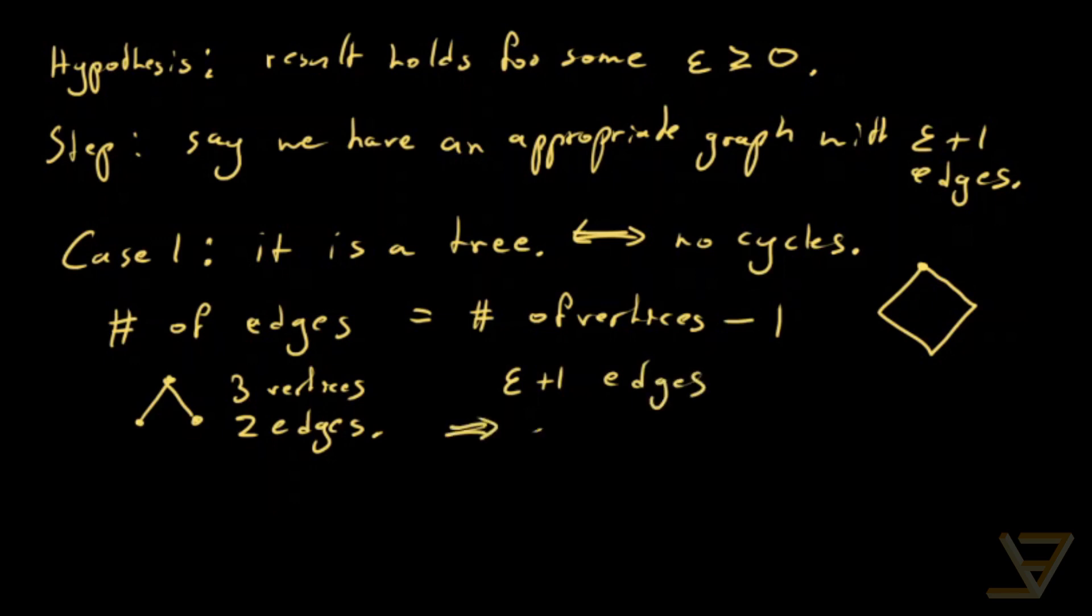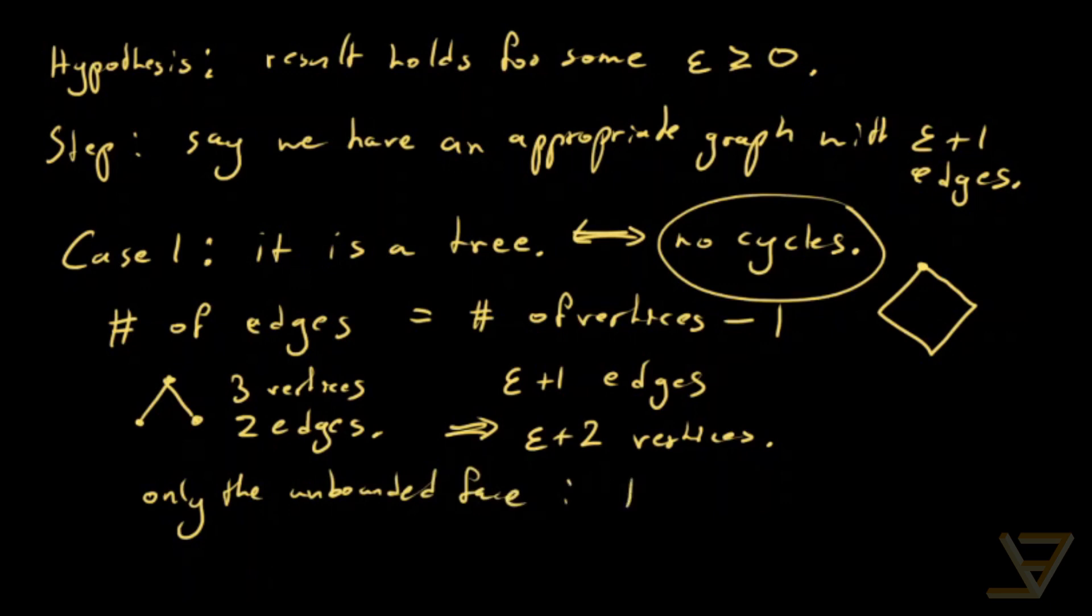So that means that if there are epsilon plus one edges, that means there are epsilon plus two vertices. And since there are no cycles, there can't be any faces other than only the unbounded face.